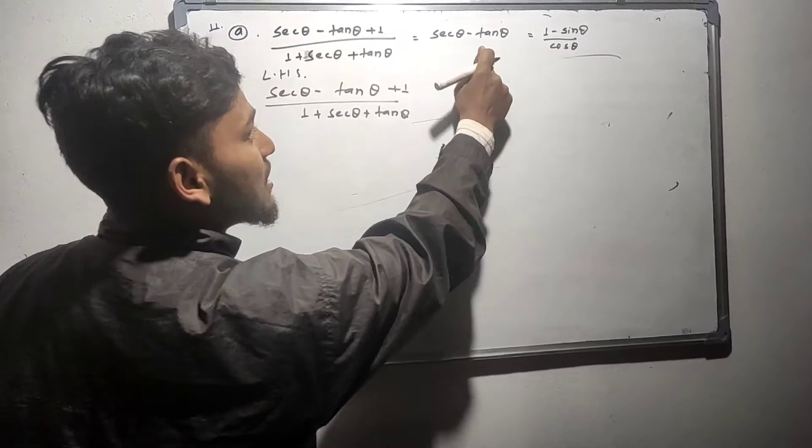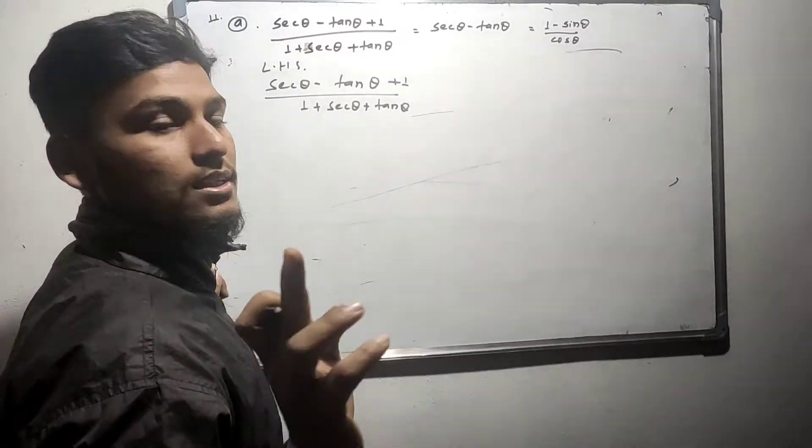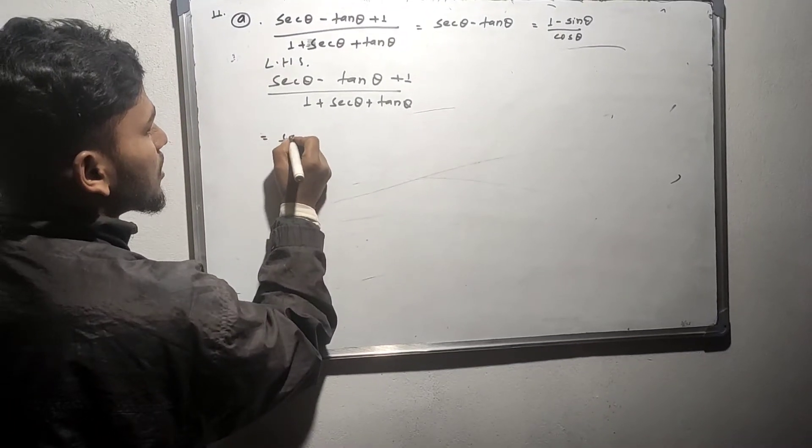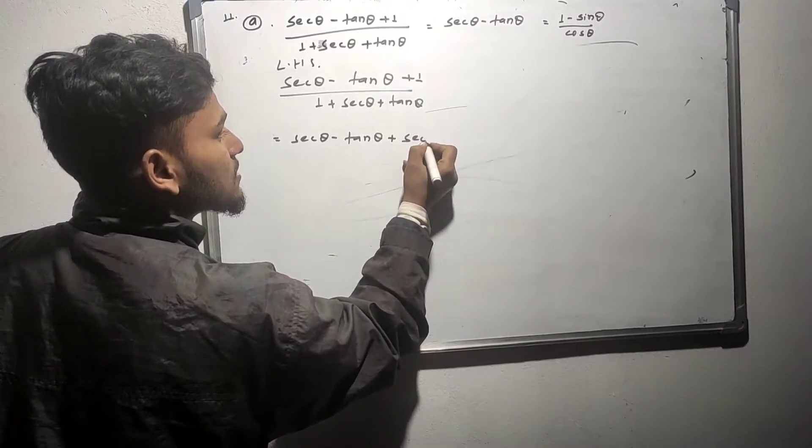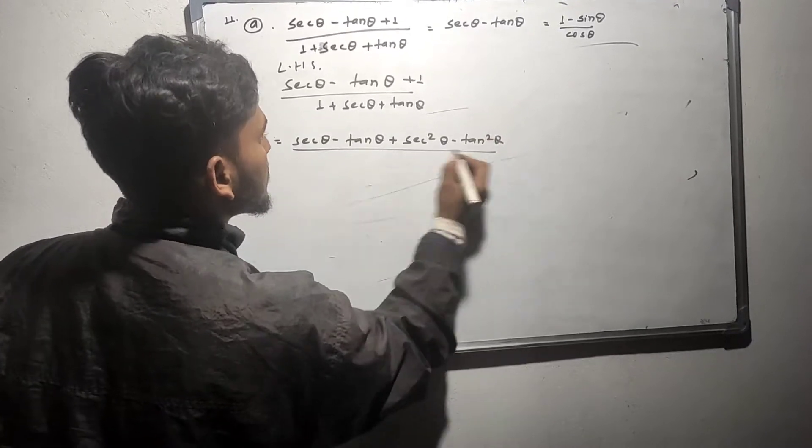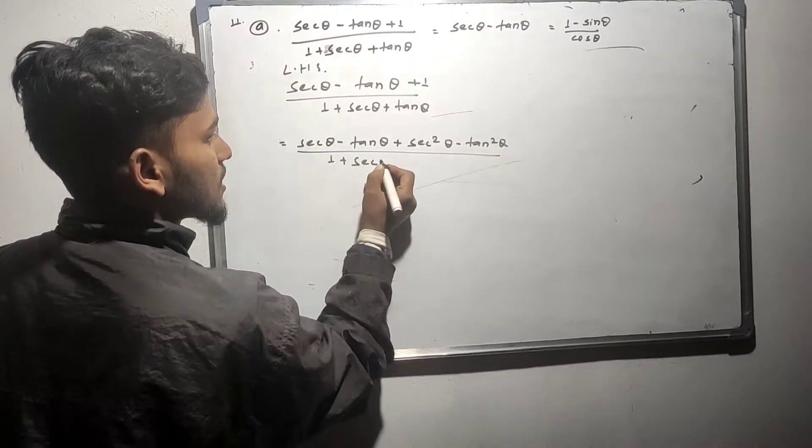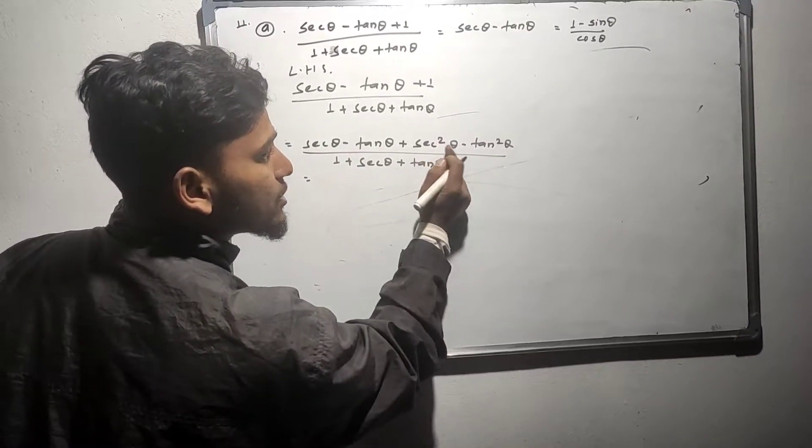We have sec theta minus tan theta. This is phi, 8 plus sec theta plus tan theta. This is phi, the formula for a square minus b.